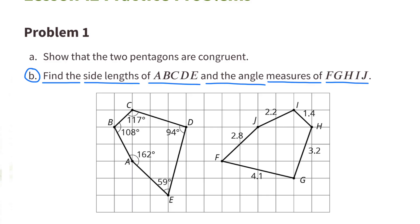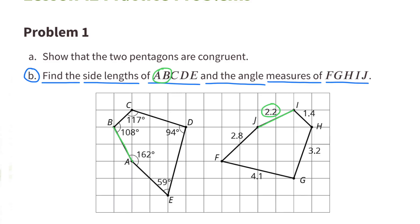B. Find the side lengths of A, B, C, D, E, and the angle measures of F, G, H, I, and J. The side length of A.B. is 2 and 2 tenths.